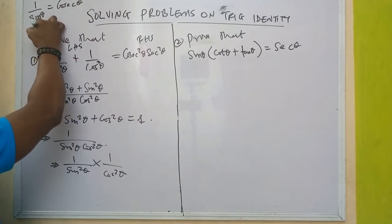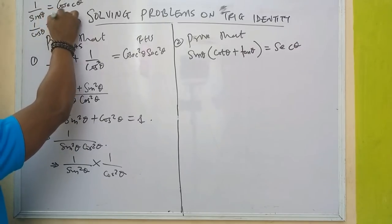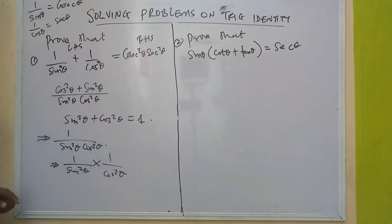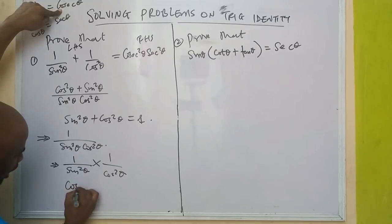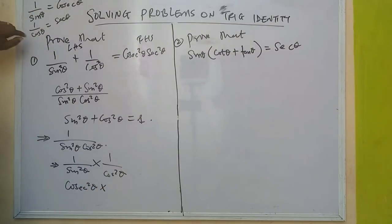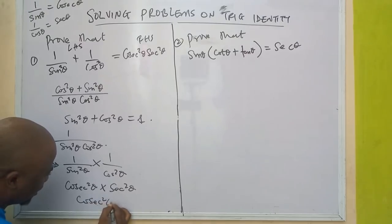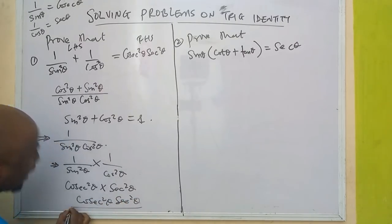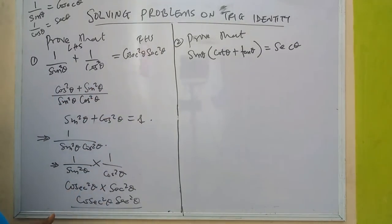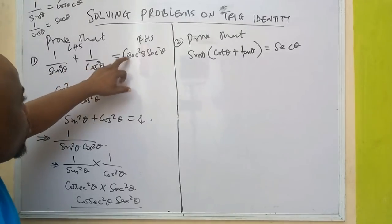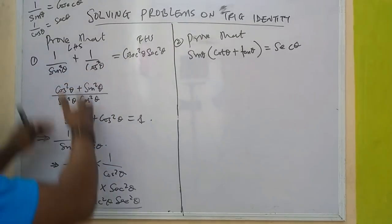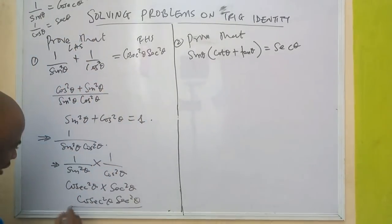Now, the identity states that when you have 1/sinθ it is the same as cosecθ, and 1/cosθ is the same as secθ. So in this case, 1/sin²θ gives cosec²θ, and 1/cos²θ gives sec²θ. Multiplying together, we have cosec²θ · sec²θ — which is exactly what we have on the right-hand side. So we have proved that 1/sin²θ + 1/cos²θ = cosec²θ · sec²θ.